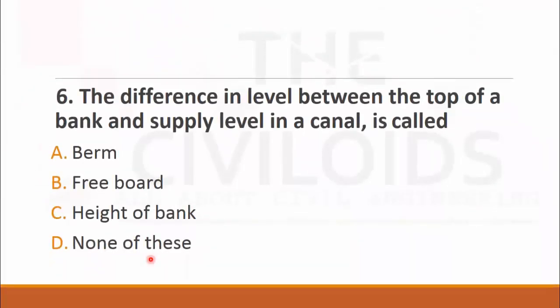MCQ number six: The difference in level between the top of a bank and supply level in a canal is called. The choices are: A. berm, B. free board, C. high top bank, and D. none of these. It is a simple MCQ and its right answer is B. free board.